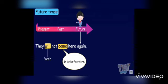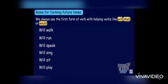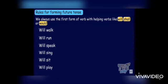Rules for forming future tense: we always use the first form of verb with helping verbs like will, shall, or would. For example: will walk, will run, will speak, will sing, will sit, and will play.